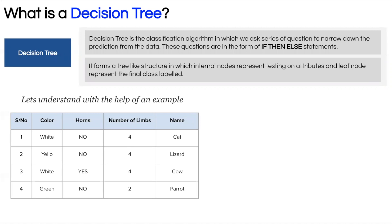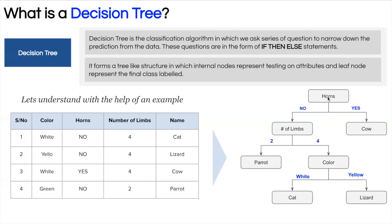This table represents the characteristics of animals — color, number of limbs, and whether the animal has horns. We want to build a model to classify animals as cat, lizard, cow, or parrot. We start by asking: does the animal have horns? If yes, it's a cow. If not, we ask about the number of limbs — two means parrot, four leads to another question about color. The leaf nodes tell us the final prediction.